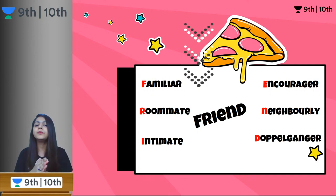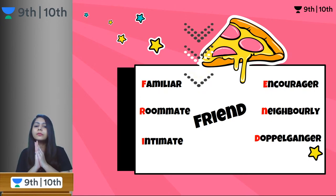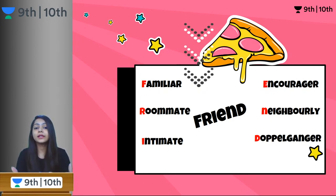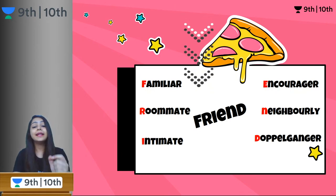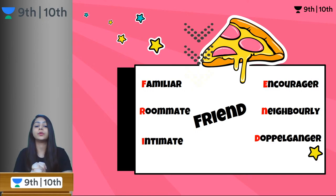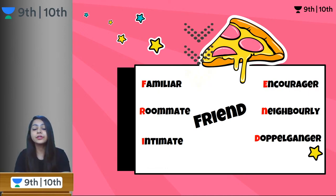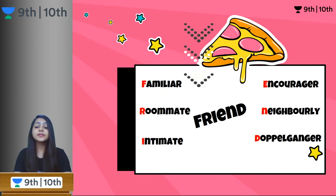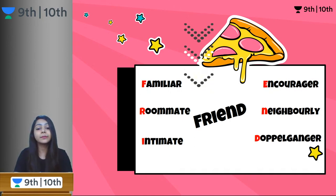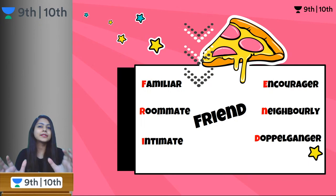A person who is familiar to you, you might call him a friend. A roommate — if somebody lives with you — might become your friend. Somebody who is very close to you, intimate, is also your friend. Somebody who encourages you — an encourager — you can call that person a friend. Somebody in your neighborhood who acts nice can also be your friend. A doppelganger is somebody who looks just like you, resembles you a lot — also somewhat related to you.